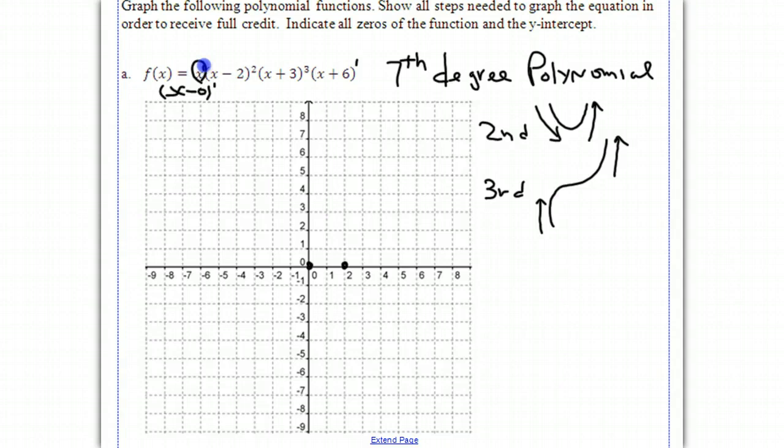At (x + 3), we know there's a root at negative 3. So I'll put that down there. And finally, at (x + 6), we know that there's a root at negative 6. And we'll put that zero there. So now we have all the roots, or what's called the zeros.